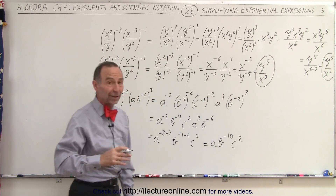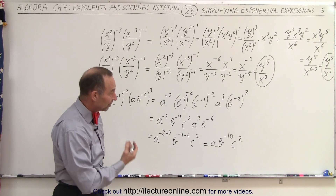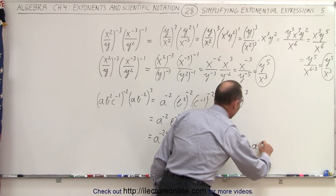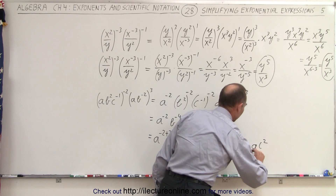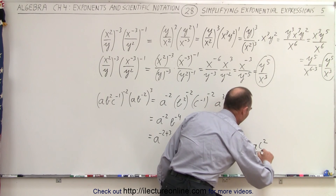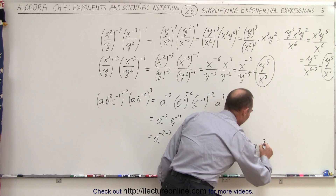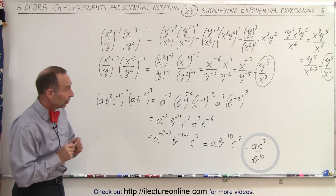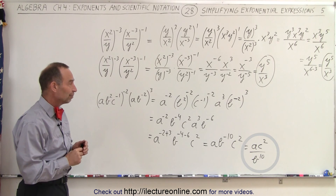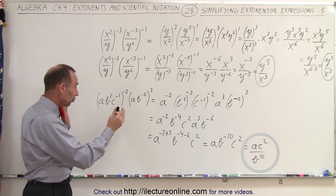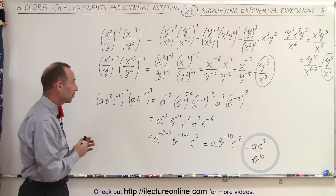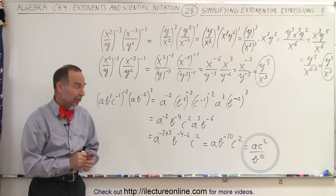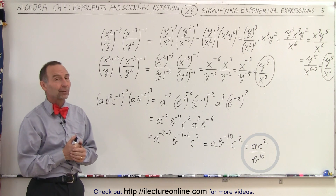And then you can see, to get rid of that negative exponent, we move b to the negative 10 power to the denominator, and we end up with a c squared divided by b to the 10 power. And that's the final result of this initial expression. Sometimes it's just better to use the rules of exponents, simplify by adding or multiplying depending on the situation, and then you quickly get to the final result.